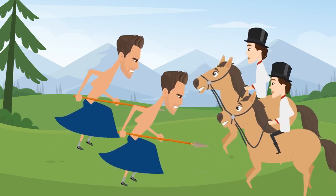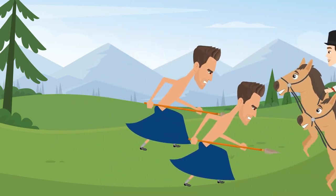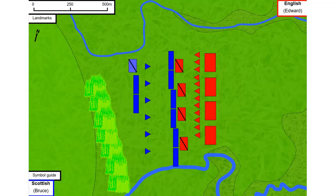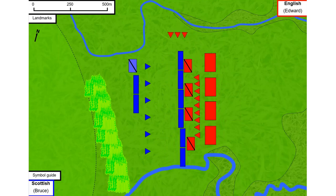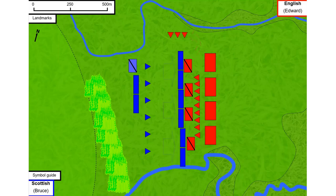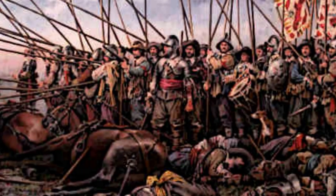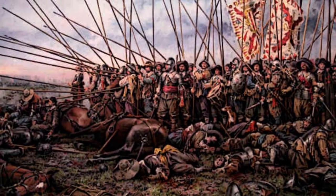The Scottish Schiltrens advance steadily, shoving the English cavalry into the mass of infantry behind them, creating further confusion. As the Scottish line advances, dressed off by the right, the ground becomes more open, meaning the Scottish left flank becomes more exposed. An English archer unit takes the initiative and crosses the Pellstream to establish a firing position to exploit this fact. The Scottish pikemen continue to push the English cavalry backward into their own infantry, inciting further confusion.